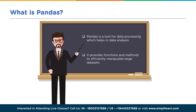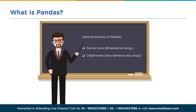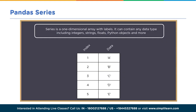Think of it as a giant Excel spreadsheet optimized to run larger data on your computer. The data structures in Pandas are series — one-dimensional arrays — and data frames — two-dimensional arrays. It really centers around the data frame; the series just happens to be part of the data frame. A series is a one-dimensional array with labels that can contain any data type including integers, strings, floats, Python objects, and more.